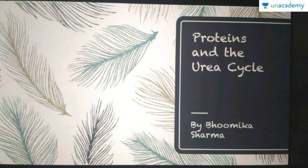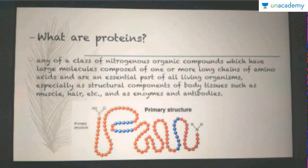Hi, my name is Pumika and the lesson for today is going to be proteins and the urea cycle. Let's start with the simplest definition of proteins: any class of nitrogenous organic compounds which have large molecules composed of one or more long chains of amino acids, and are an essential part of all living organisms, especially as structural components of body tissues such as muscle, hair, etc., and as enzymes and antibodies.